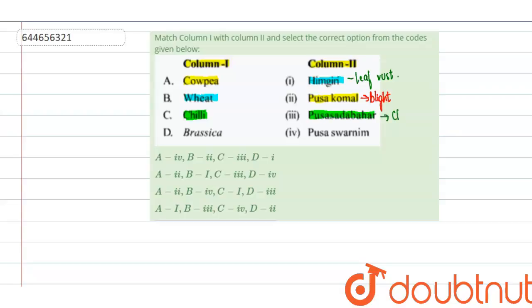The last one is brassica. Brassica is a plant and its variety is Pusaswarnim. This particular variety was developed to make it resistant to white rust disease.